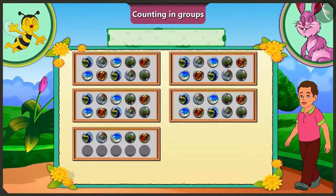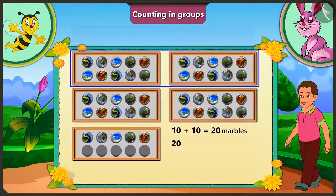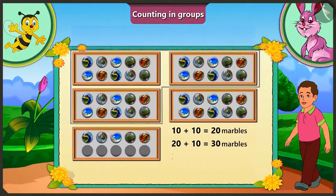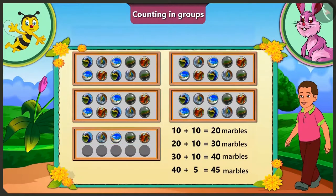Now tell me, what is the total number of marbles here? We have 10 and 10 — 20, 20 and 10 — 30, 30 and 10 — 40, 40 and 5 — 45 marbles in total. Well done honey.